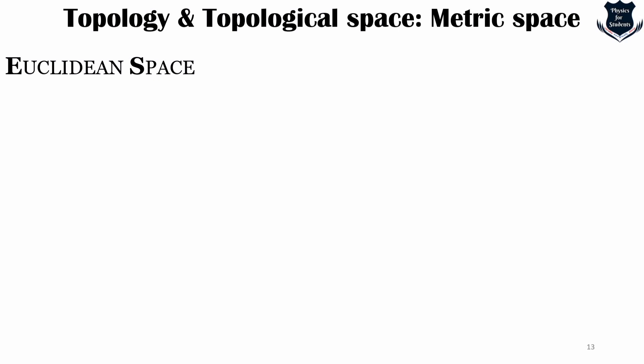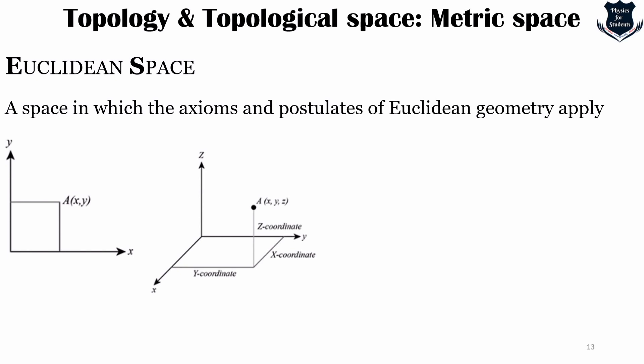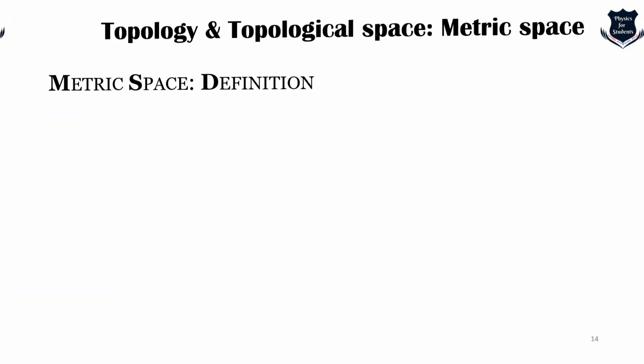Let us quickly define what Euclidean space is. Euclidean space is basically the fundamental space of geometry, intended to represent physical space. Originally it was a three-dimensional space of Euclidean geometry, but in modern mathematics there are Euclidean spaces of any positive integer dimension. From Euclidean space we go into metric space — a set together with a notion of distance between its elements, usually called points. In metric space, this distance is measured by a function called a metric or a distance function.